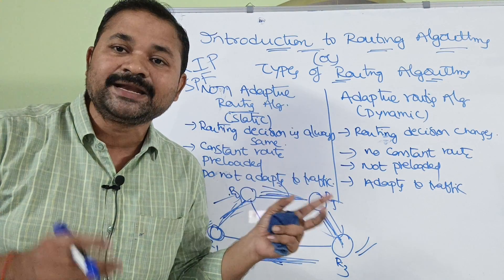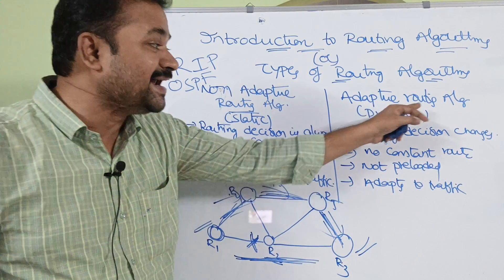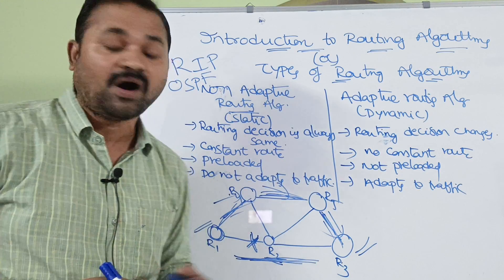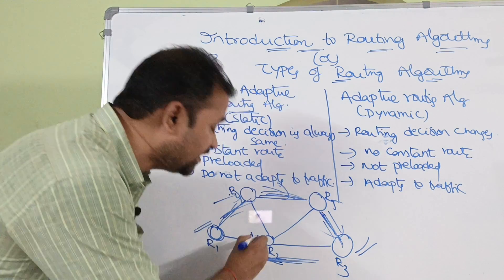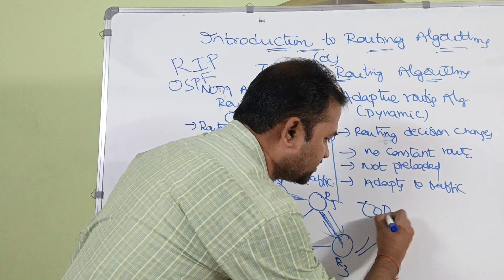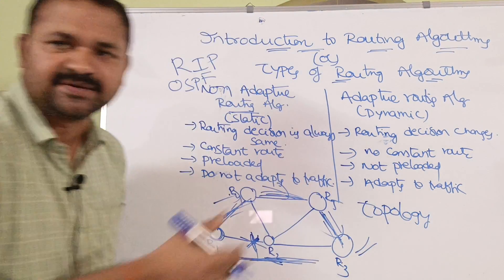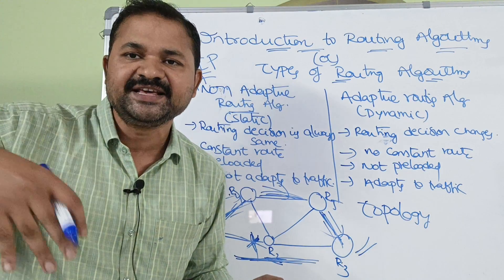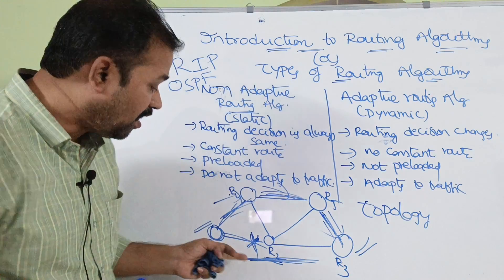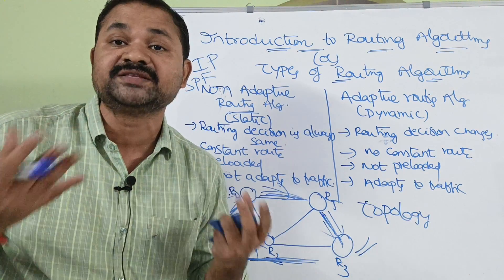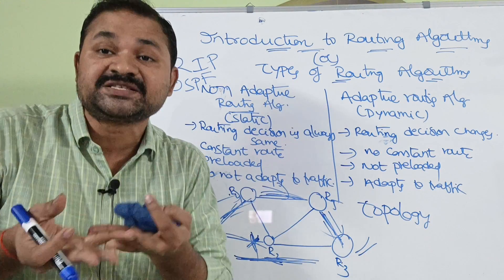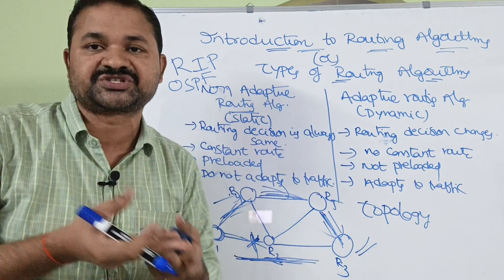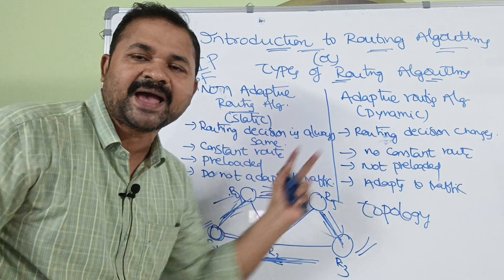Here, the router can make dynamic decisions and adapt according to the situation. If there is too much traffic or if a link fails, then the topology changes — meaning the graph is changing because the link is broken. If there is congestion or if the link fails, that means the topology changes, and the router will adapt to the situation and can transmit the packet via another path.